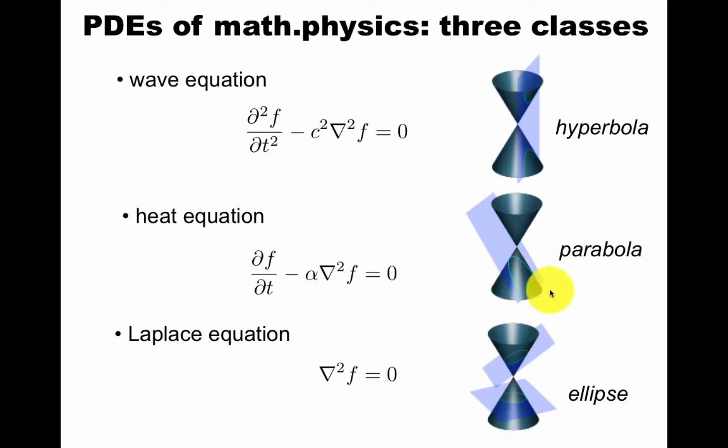They're called hyperbolic, parabolic, and elliptic, classified by the signature quadratic form. The relation between the time derivative and the space derivative here is different than the relation between the space derivatives and the time derivative which is not here.